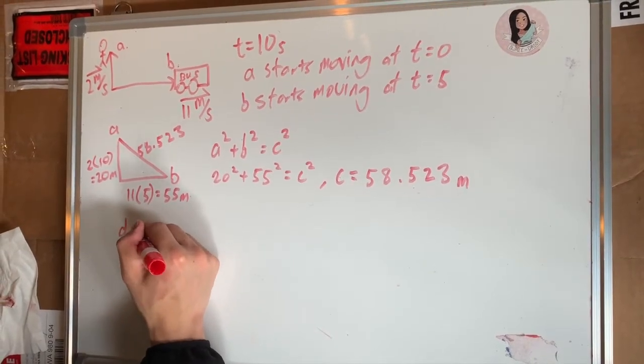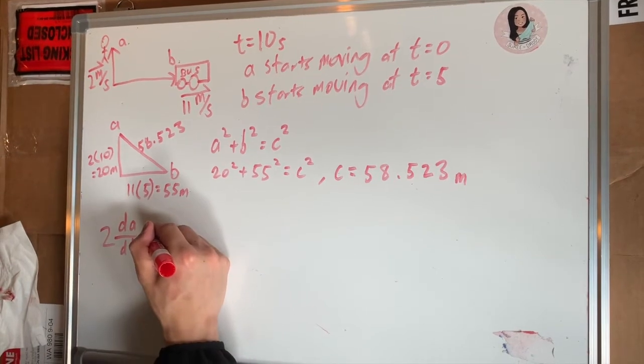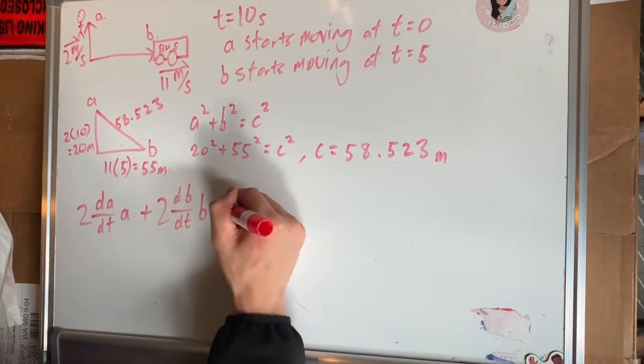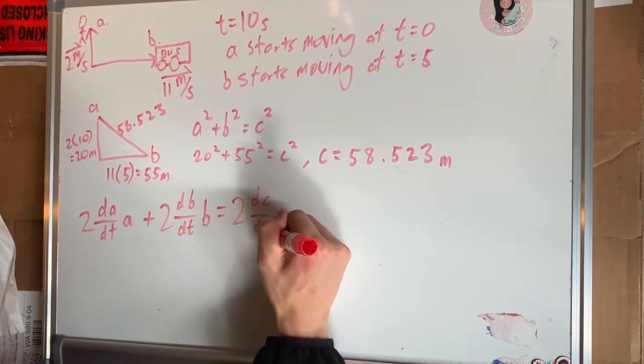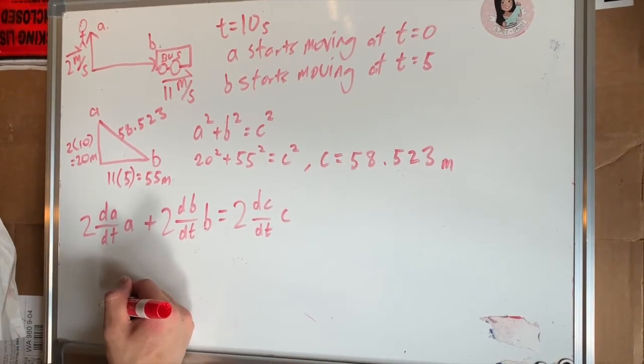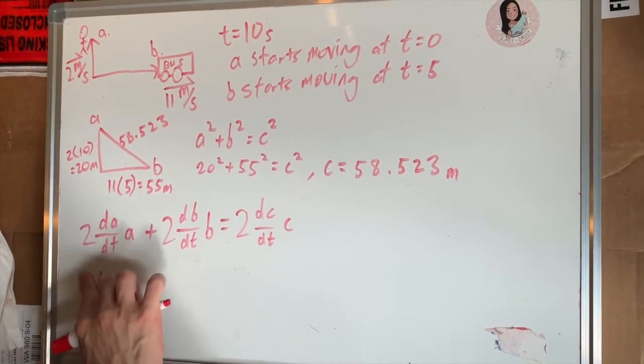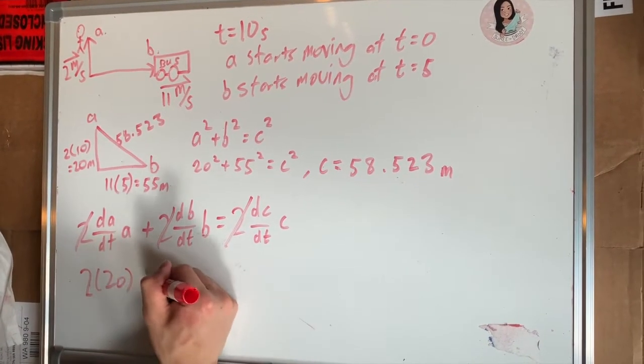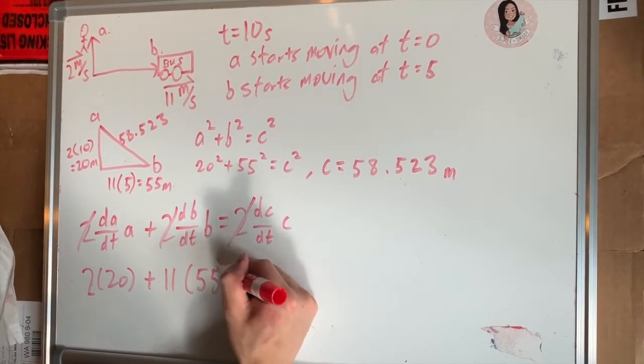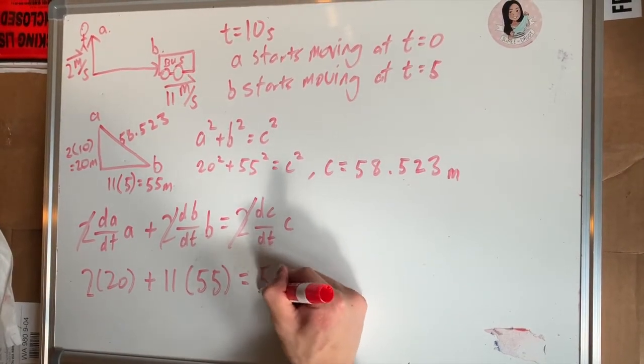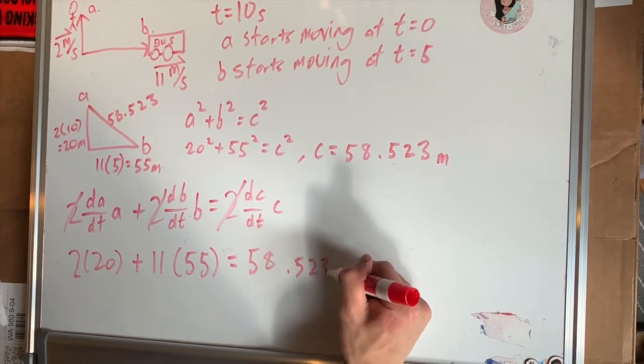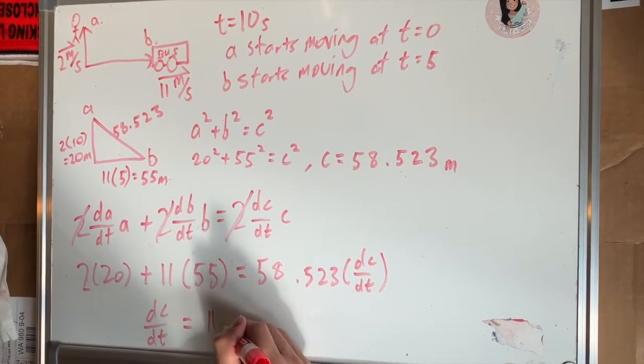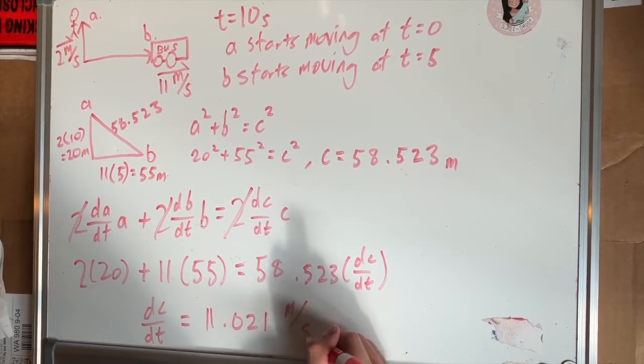Now we take the derivative of a squared plus b squared equals c squared with respect to time, and we get 2(da/dt) times a plus 2(db/dt) times b equals 2(dc/dt) times c. We can divide by 2 on both sides, then plug in da/dt and a, plug in db/dt and b, and plug in the value for c, which is 58.523. Solving for dc/dt gives us dc/dt equals 11.021 meters per second. And that's our answer.